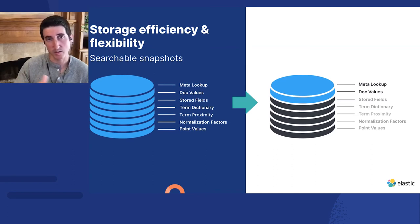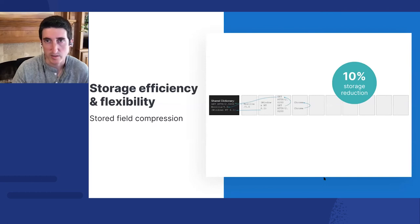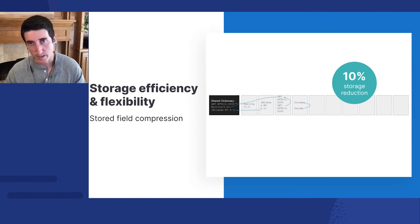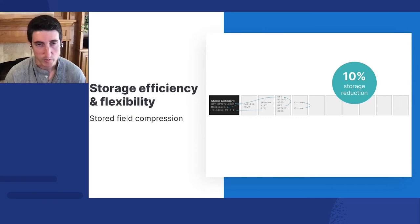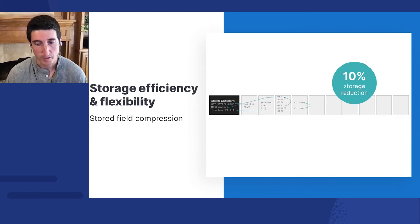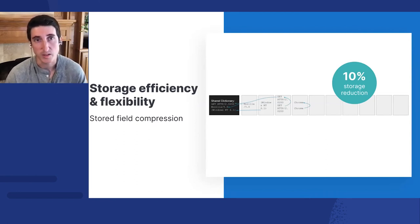Next in storage efficiency: we saw about a 10% storage reduction from improvements to how we compress stored fields. When storing data in Elasticsearch, we compress it — we've done this for a long time, but we wanted to make compression more efficient. Using best practices from the industry, a key part was introducing a shared dictionary. When we separate data into blocks, a shared dictionary helps achieve more efficient compression. In our tests, that got us about a 10% reduction in storage — which at scale ends up being quite dramatic.